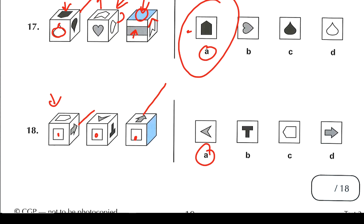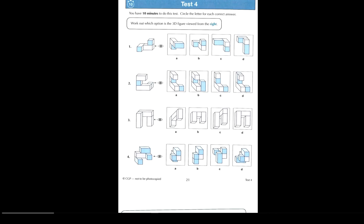That's the end of this particular video. Recap of test number four. Question number one — Faha. What's your answer? The answer is B. If you look at it from the side, you will see the grey on the bottom, and above it the blue. If you look this way you'll also see the blue again over here.